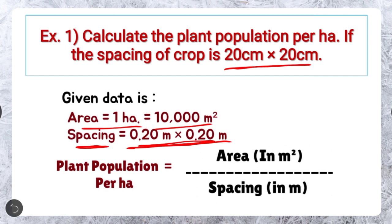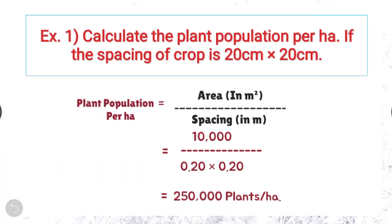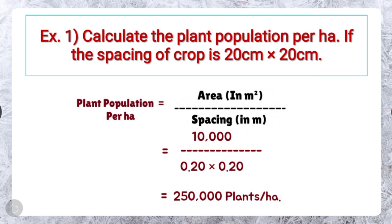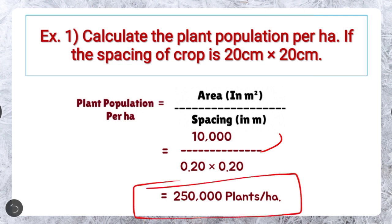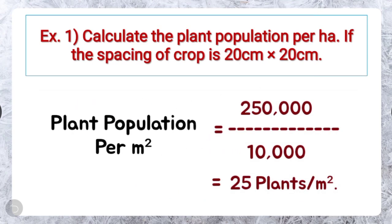Now here is our formula: plant population per hectare equals to area in meter square divided by spacing in meter. Putting the given values, it will be 10,000 divided by 0.20 × 0.20, and the answer will be 2,500,000. Hence, the solution is 2,500,000 plants per hectare.